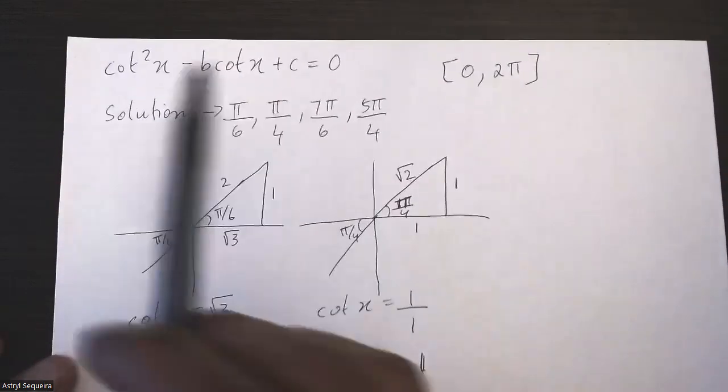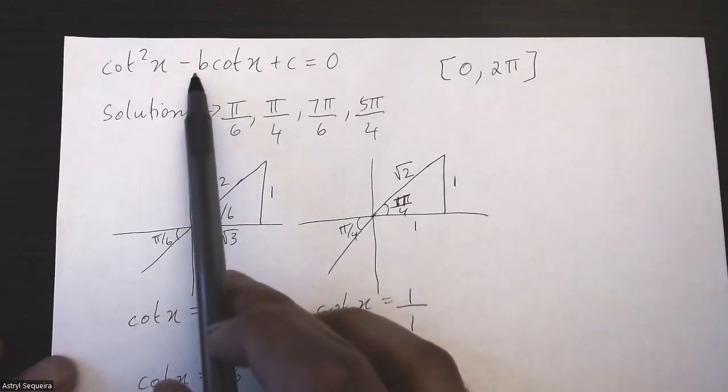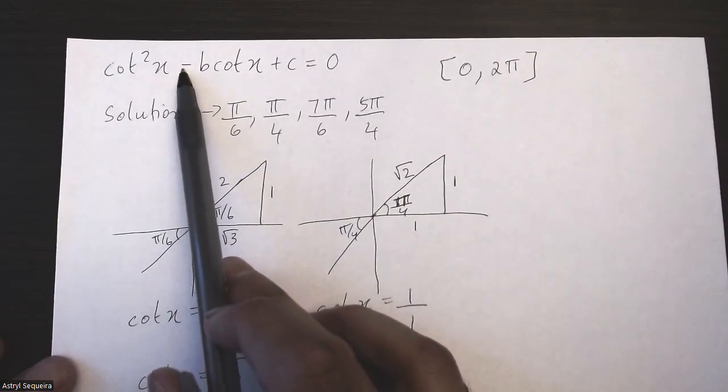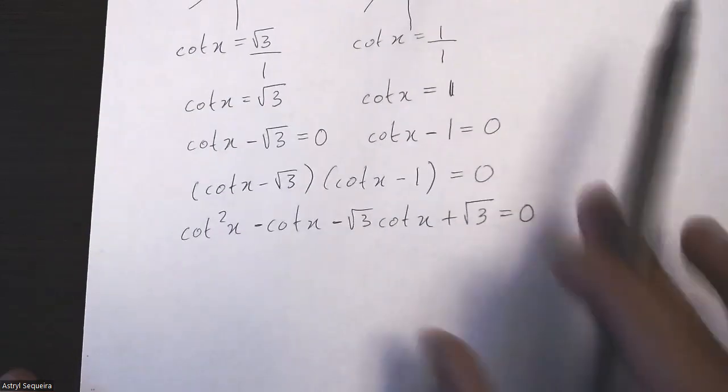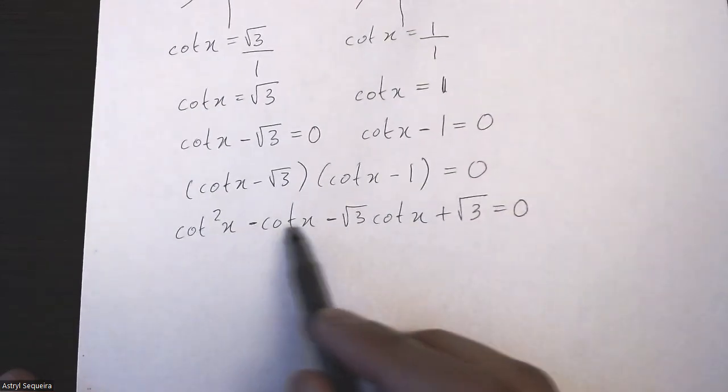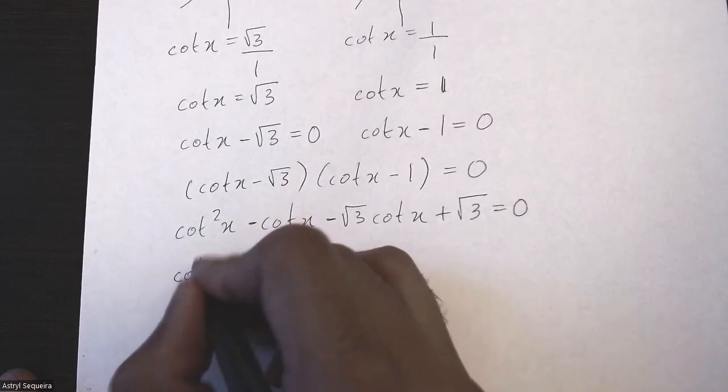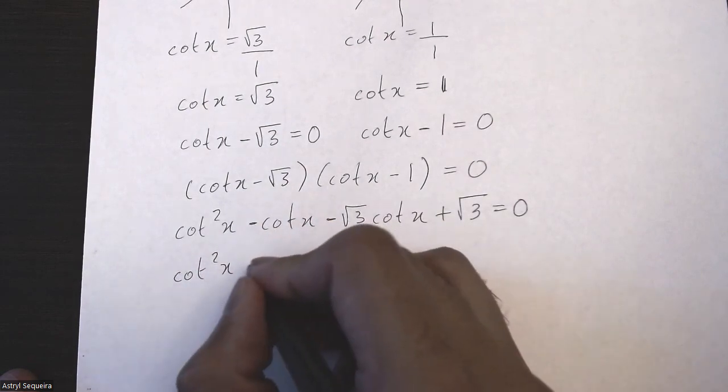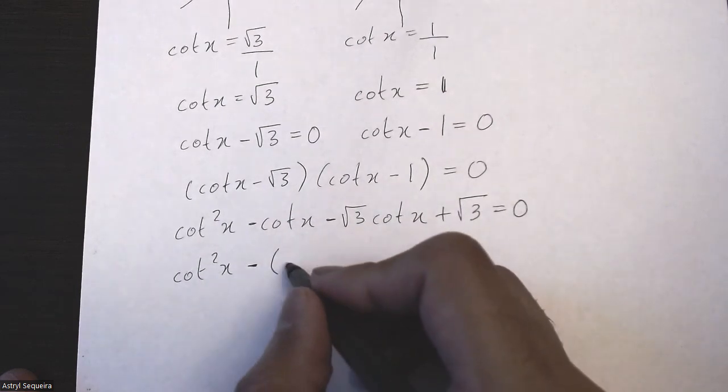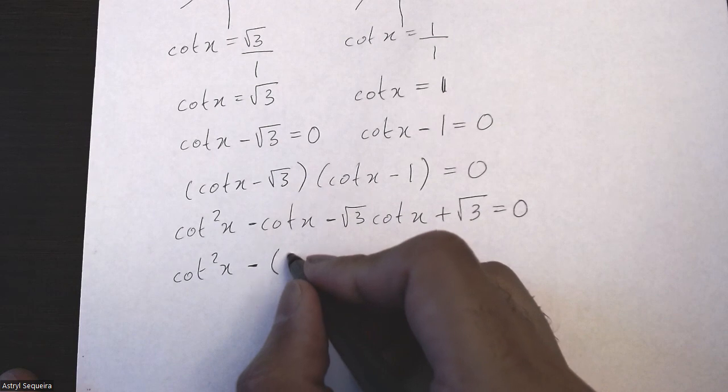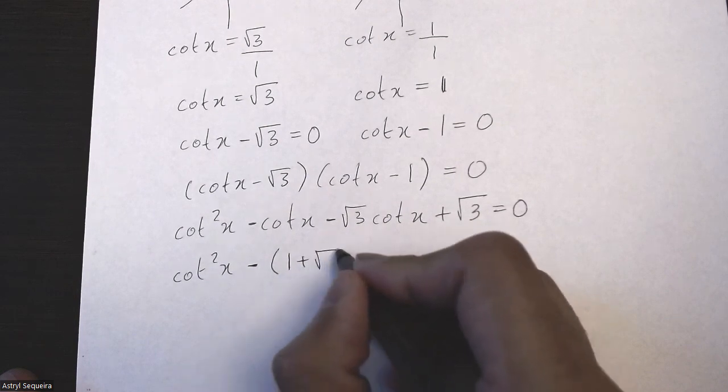Now this is almost the same as the original. The only difference is we need a negative and we need to factor out a cot. So from cot² x, if I factor out the negative, I'll be left with 1 + √3.